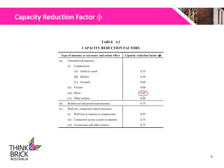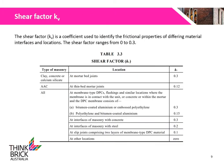A capacity reduction factor shall be applied to the unreinforced masonry shear capacity. The capacity reduction factor for unreinforced masonry is 0.6, found in Table 4.1 of AS3700. A shear factor KV is used to calculate the frictional component of the shear capacity and differs for different interfaces and locations. The shear factor ranges from 0 to 0.3, found in Table 3.3 of AS3700.